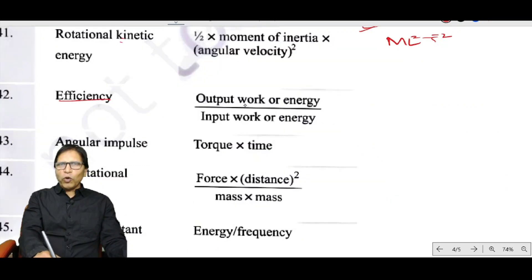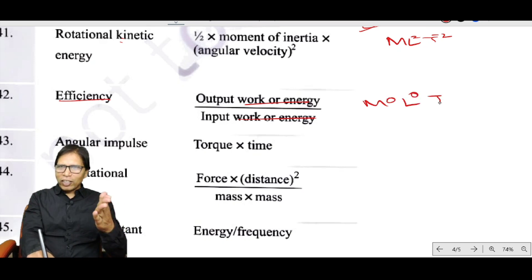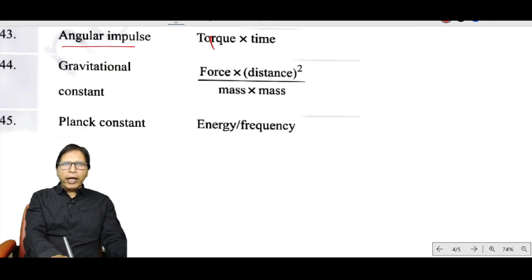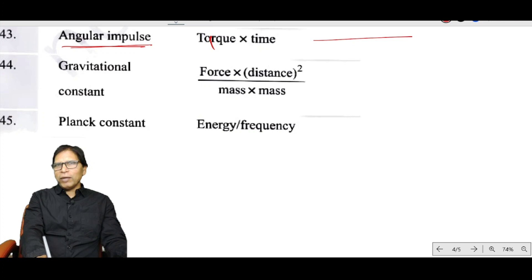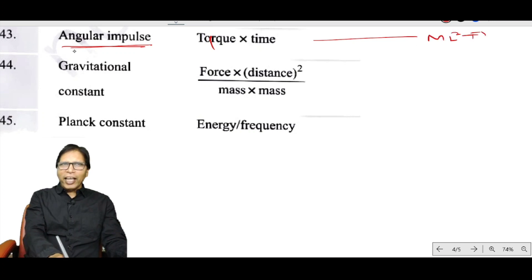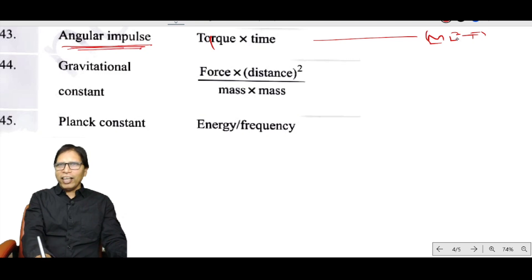Efficiency equals work output divided by work input, so it is dimensionless: M⁰N⁰T⁰. Angular impulse, angular momentum, and Planck's constant all have the same dimension: ML²T⁻¹.